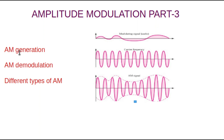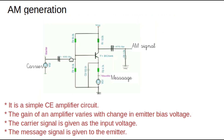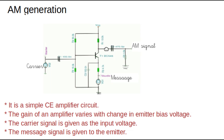So how are we going to generate an AM signal with the help of a circuit? This CE amplifier is the circuit for the generation of an AM signal. We apply the carrier signal at its input, the message is applied at the emitter of the amplifier, and we get the AM signal at the output. The gain of this amplifier varies with a change in its emitter bias voltage — when the voltage at the emitter changes, it varies the gain of this amplifier.